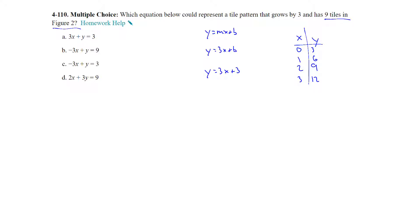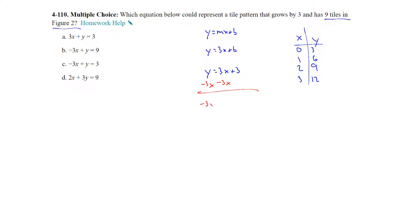Which of the choices a, b, c, or d is equivalent to y equals 3x plus 3? Since their equations have x and y on the same side, let's subtract 3x from both sides, giving us negative 3x plus y equals 3. That looks like choice c.